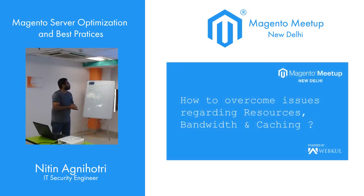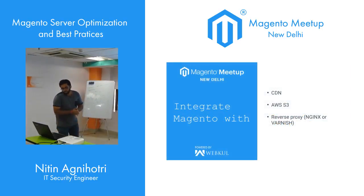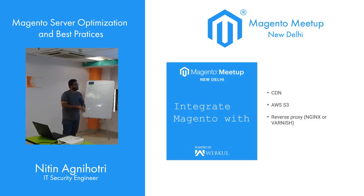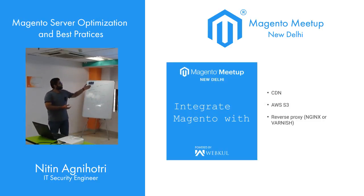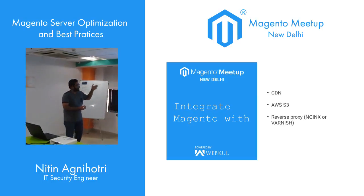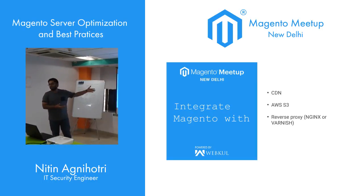Now let's talk about how we can overcome these issues around resources, bandwidth, and performance. We can integrate Magento with three key things: CDN, AWS S3, and Nginx Reverse Proxy. There are various other integrations possible, but given our limited time, I'll focus on these three, which we as a developer community can use with Nginx.